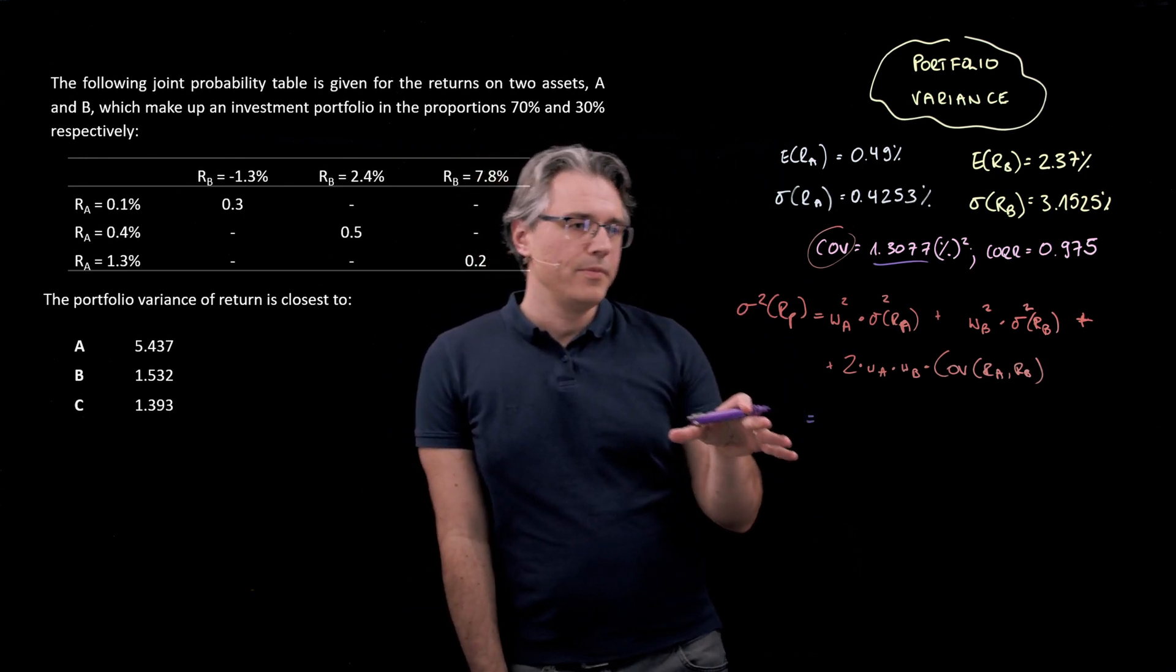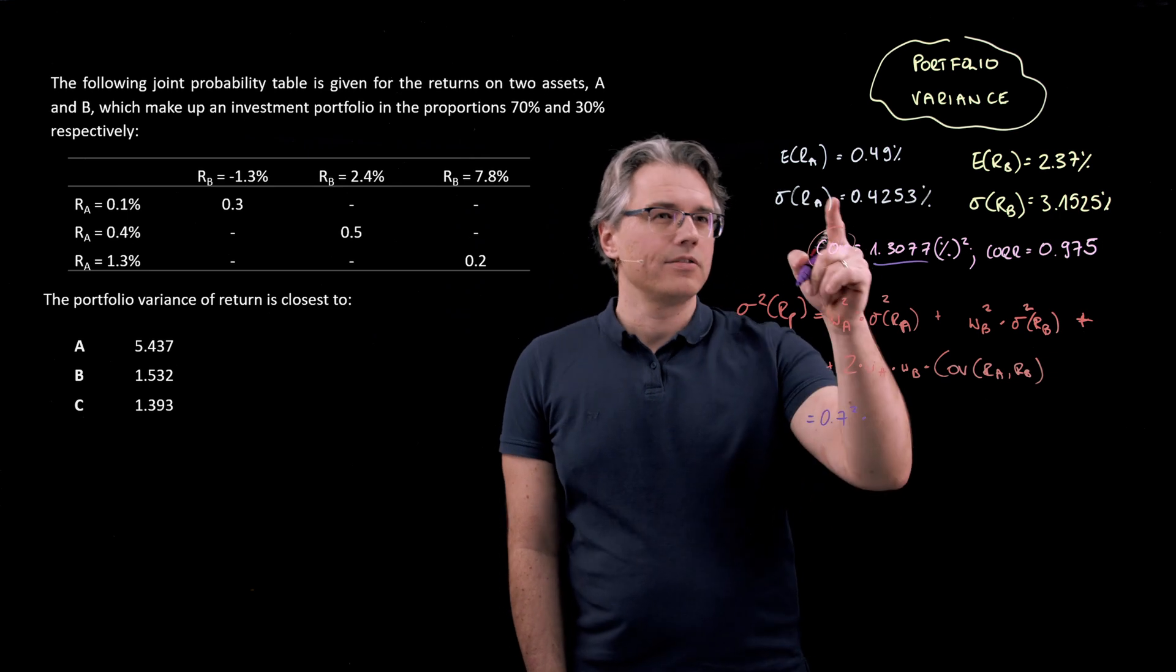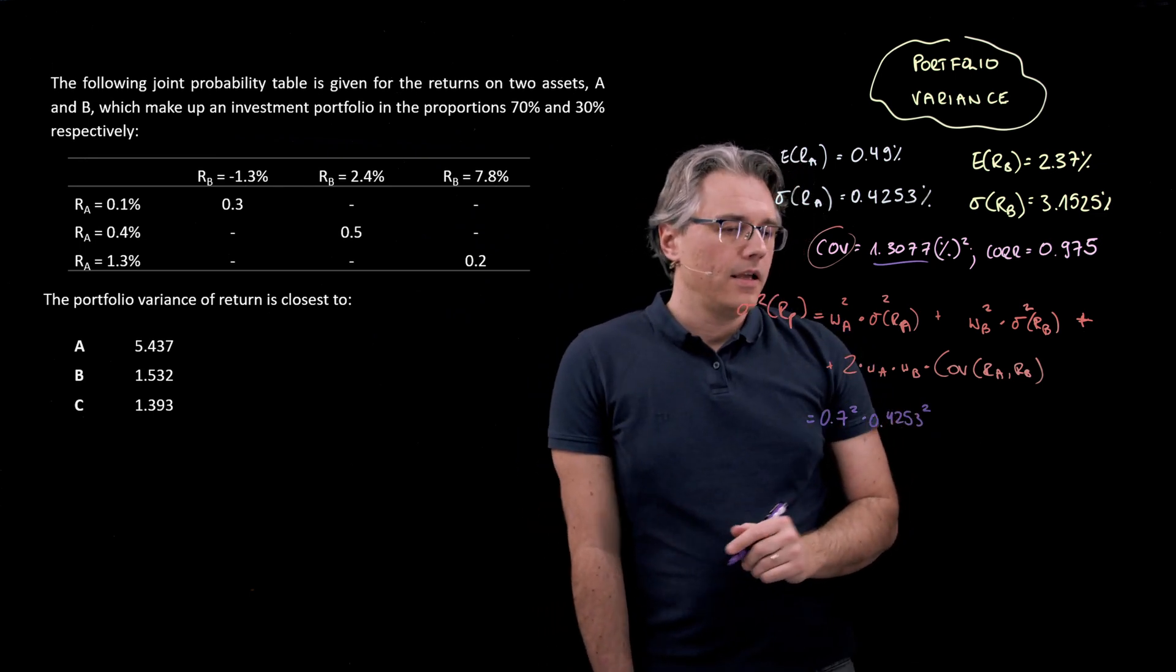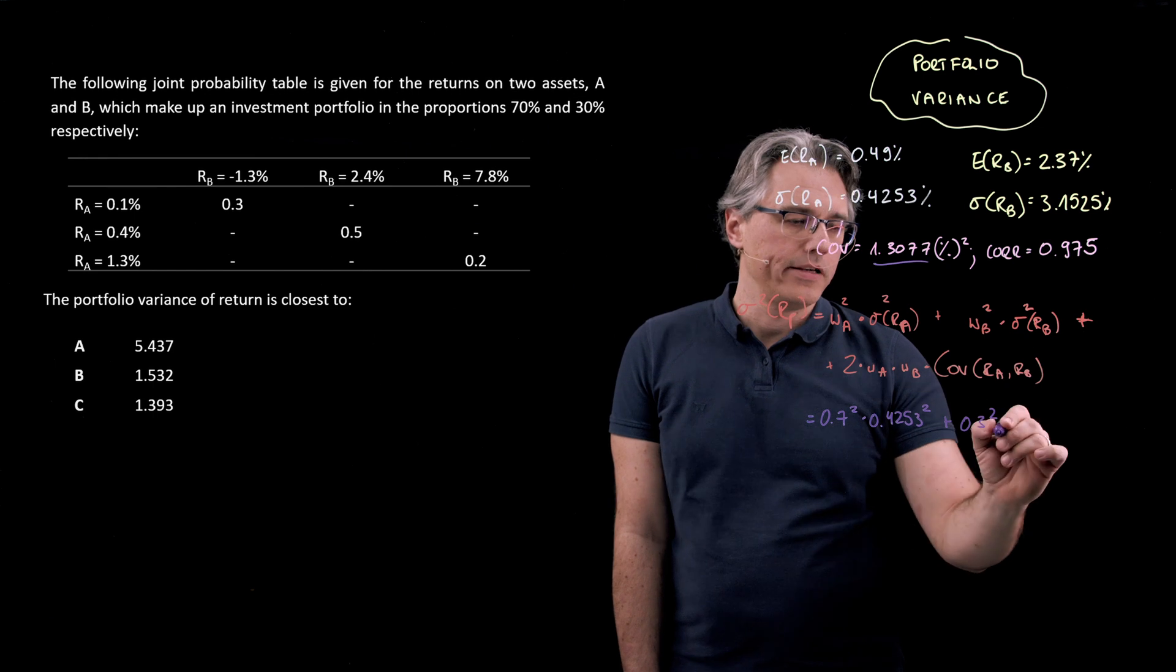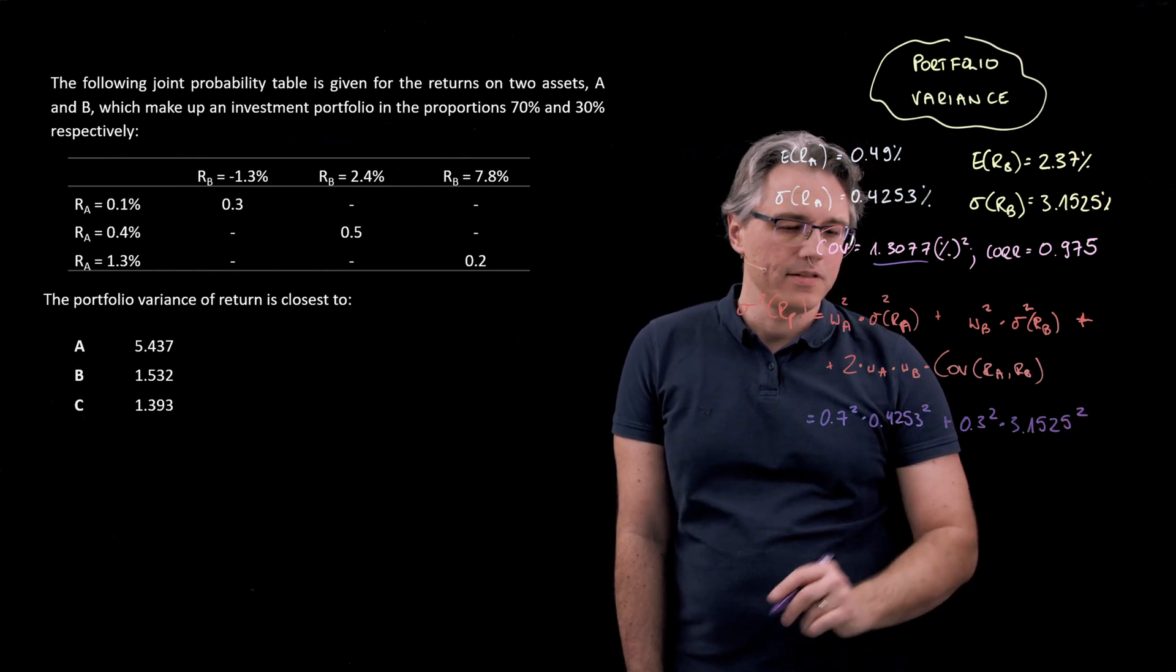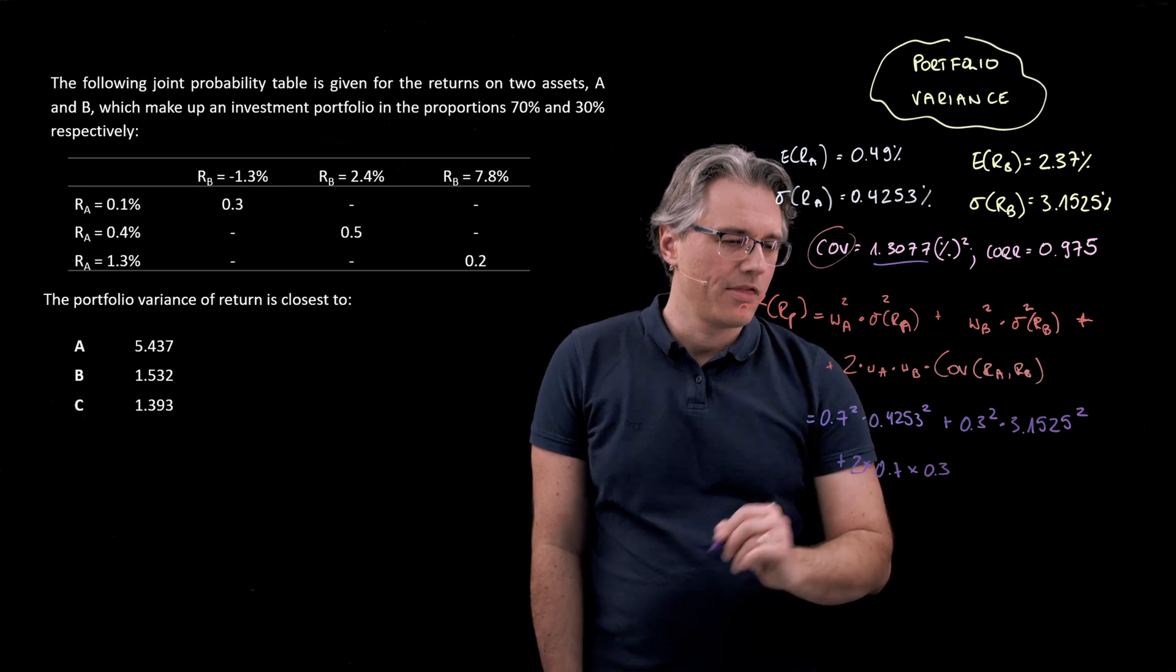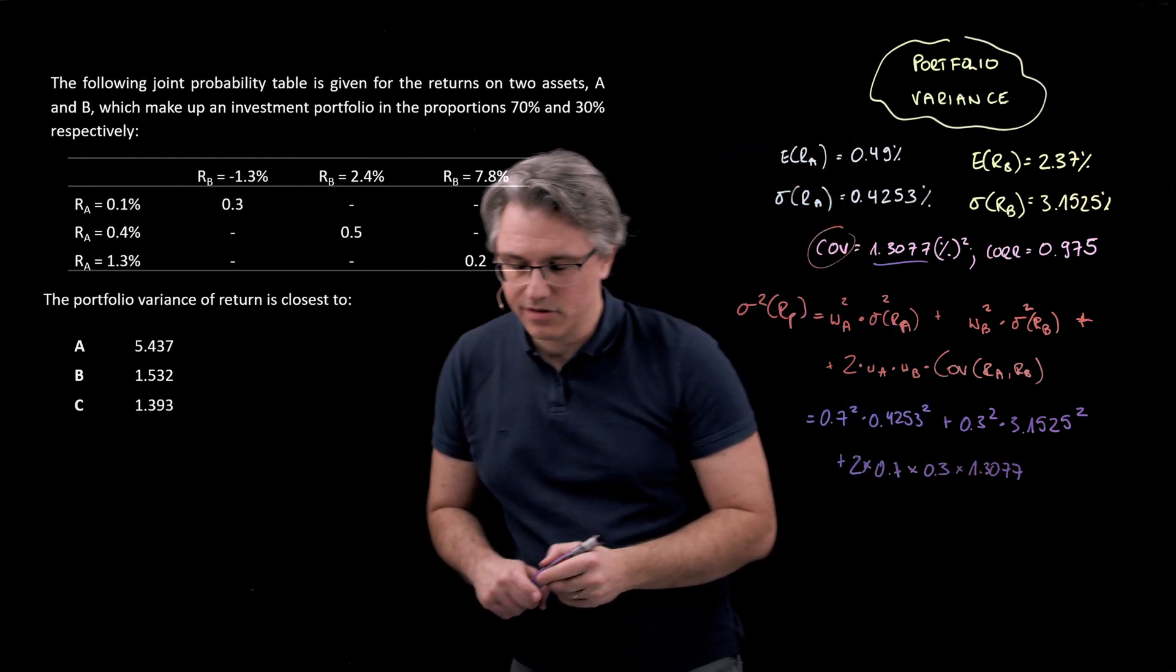Let's put the numbers in. The weight of asset A was 70%, so that's 0.7 squared times its standard deviation, 0.4253, that's squared as well. Then, the second one was weight B, 0.3 squared, times its standard deviation of returns, 3.1525, square this. And we've got two times weight of A, 0.7, times weight of B, 0.3, and the covariance, which was 1.3077.